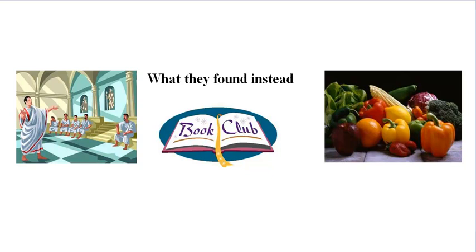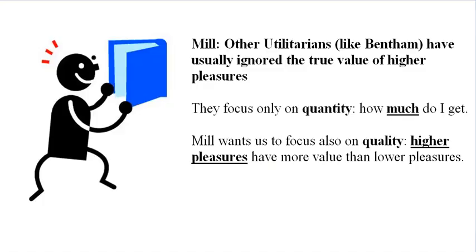It is no surprise that Mill locates the controversy of utilitarianism next to the controversy of Epicureanism that had occurred 2,000 years earlier. Both were being accused of encouraging people to indulge like animals in simple pleasure. But Mill believes that a utilitarian would be like an Epicurean and not encourage a lifestyle of animalistic pleasure. Mill does, however, blame the earlier utilitarians such as Bentham for the fact that utilitarianism is accused of encouraging people to live like animals.